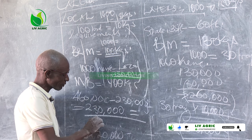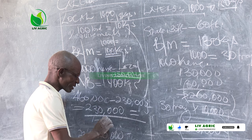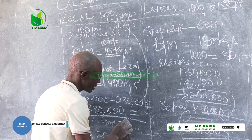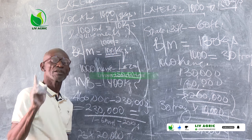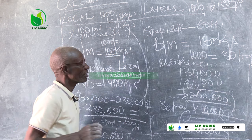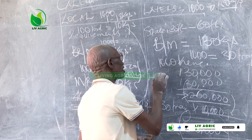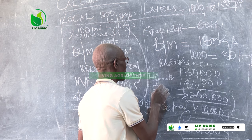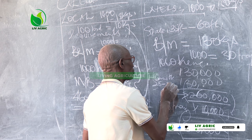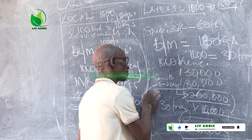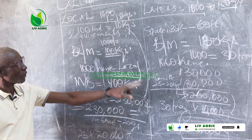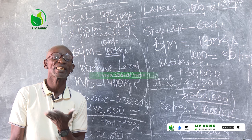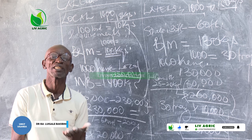From one day old up to 6 months, local birds require 20 kgs per bird. Then from one day old to 6 months, a layer requires either 25 to 28 kgs. This is where your calculation should be.